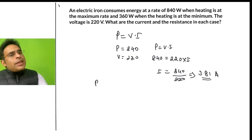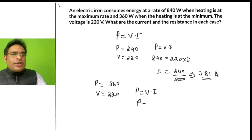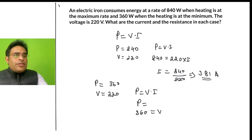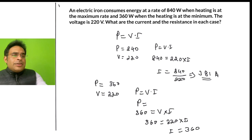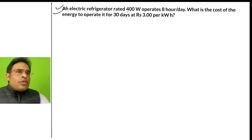For the second case, power is 360 watts and voltage is again 220 V. Using P = V × I: 360 = 220 × I, so I = 360 / 220 ≈ 1.64 amperes.